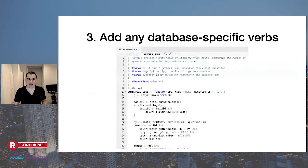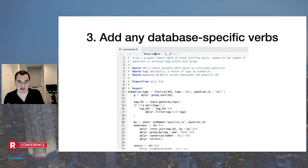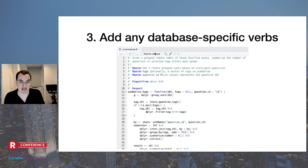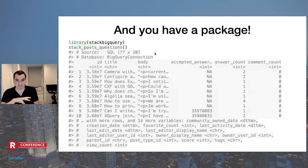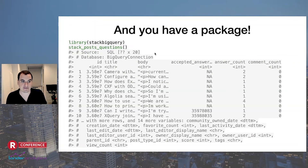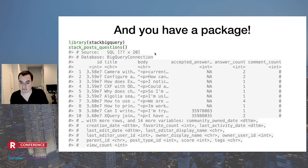Because we already have this framework of a package, I might add more database-specific verbs. We've got the basics: ways to list tables and access each table individually. But for Stack Overflow data, I might be interested in aggregating by tags — counting the number of questions with a particular tag or programming language. The sky's really the limit; you add functions to the skeleton that DB Cooper gives you. And just like that, you have a package. Someone wants to work with the data: they say `library(stackBigQuery)`, and `stack_posts_questions()` gives them a preview of that table.